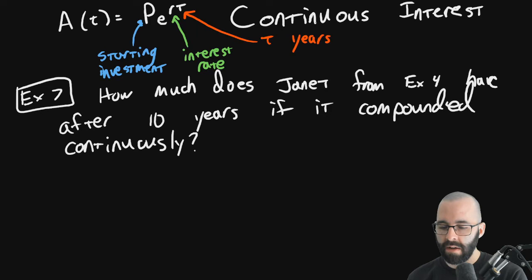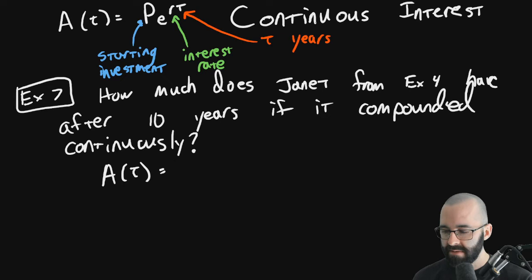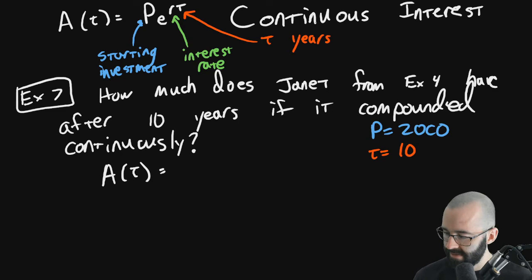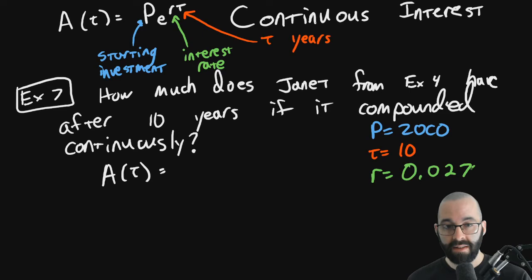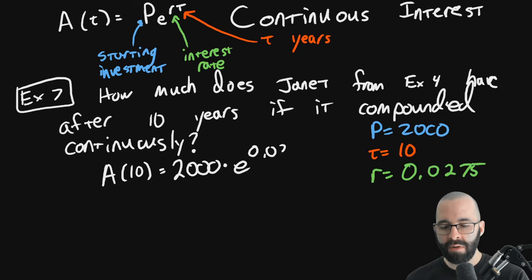Well, let's use the formula. Go back to example 4. What did we have? She was investing $2,000. That was her P. She wanted it for 10 years, I think. Yep, 10 years. And her interest rate was 2.75%. Remember to write it as a decimal. So then, after 10 years, this is going to be A(10). She's going to have, use this formula. P, 2000, times E, to the R, 0.0275, times T, which is 10.